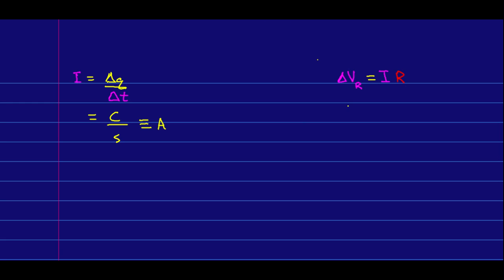Ohm's law gives us our units for resistance. It is clearly a potential difference divided by a current, and so it must be in volts per ampere, and that is defined as an ohm, which we use the capital Greek omega for.